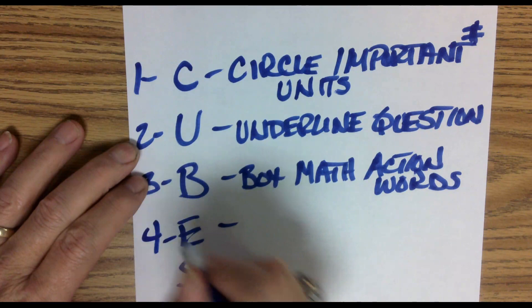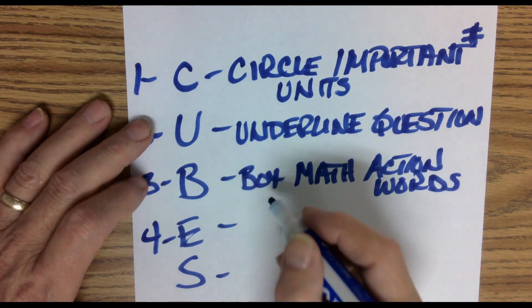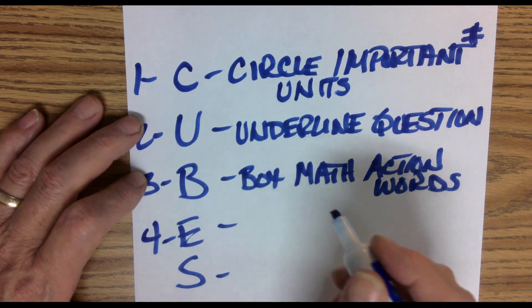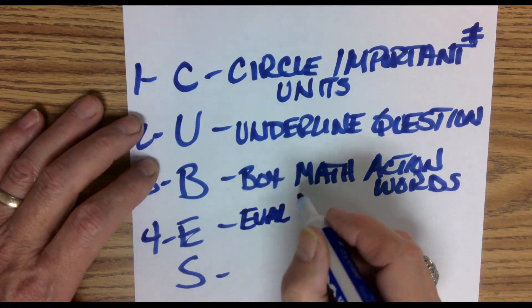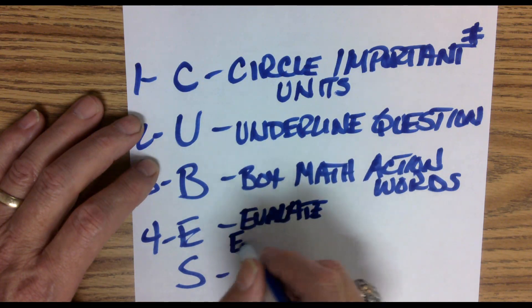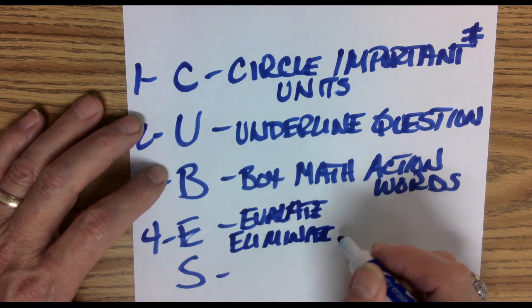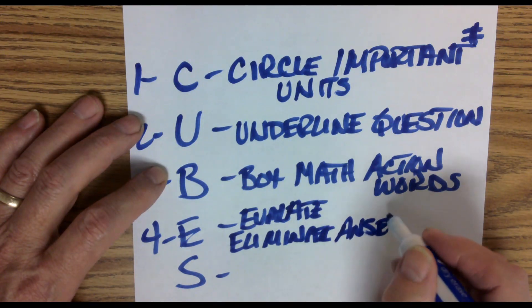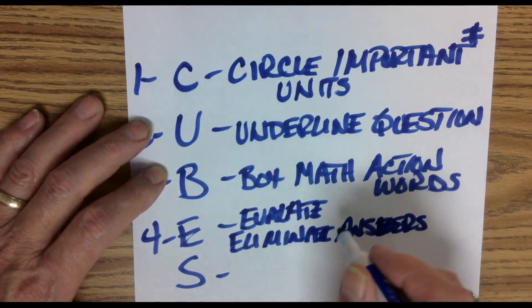Number four is, by looking, you've read the question twice now, you have an idea of what you're looking for, you are going to evaluate and eliminate answers that don't make any sense and come up with your plan.